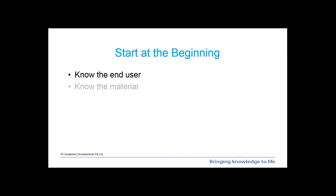Secondly, we have to know the material. We have to know and understand the material that we are producing the report based on, in order to understand what the variables may be and what related materials should be included — things that may not be in our current data but are critical to the report.